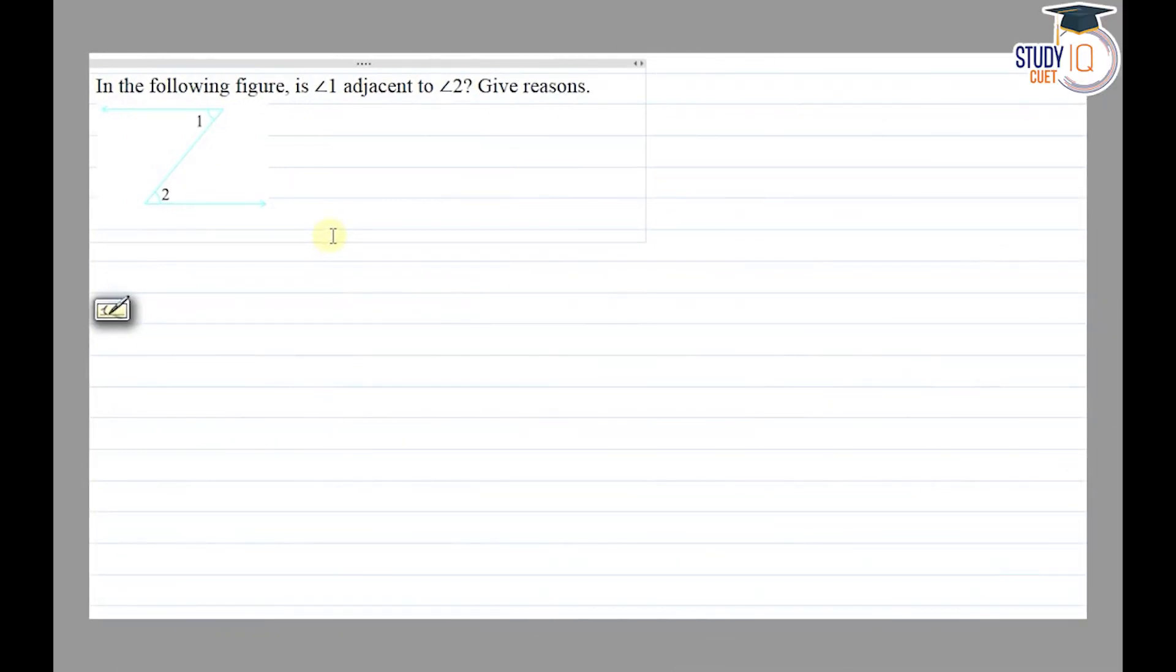Hello everyone, this question appears in class 7th NCERT chapter of Lines and Angles. This is the 11th question of its exercise 5.1. So the question says that in the following figure, is Angle 1 adjacent to Angle 2? Give reasons.